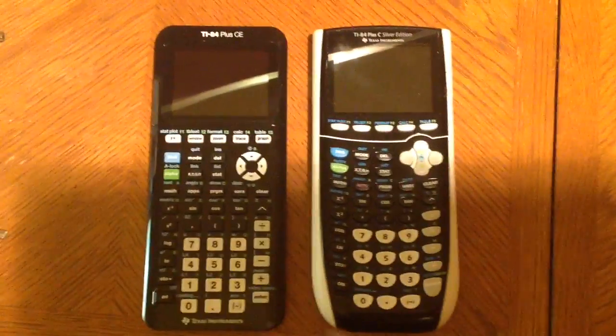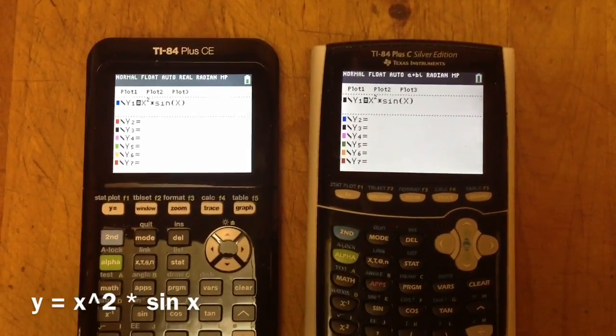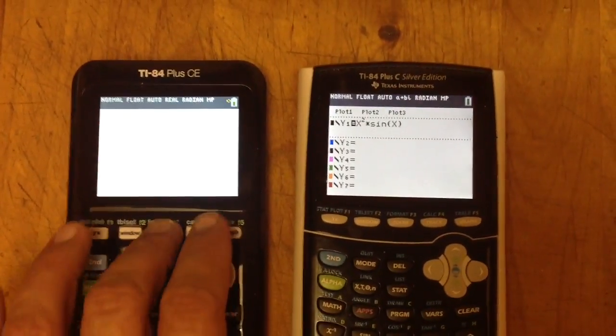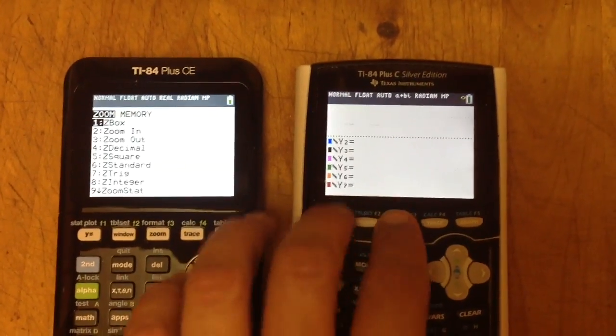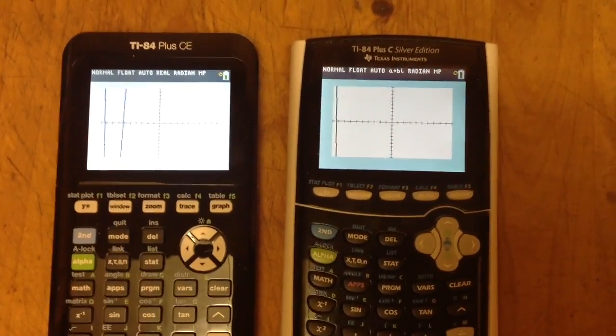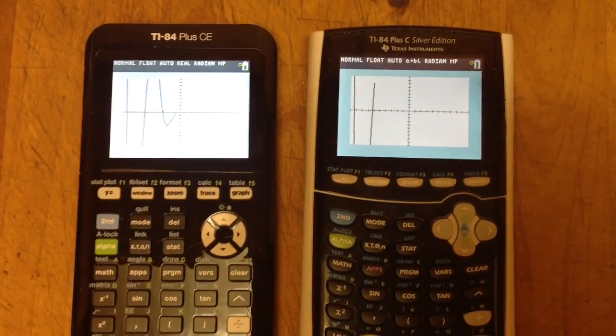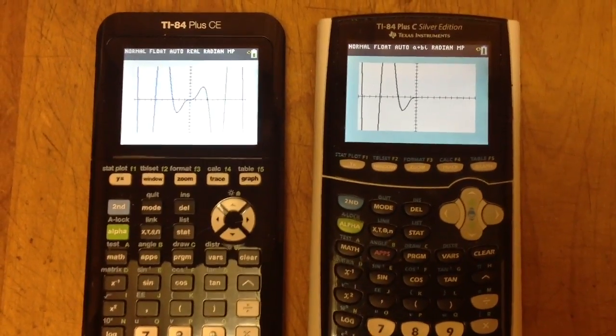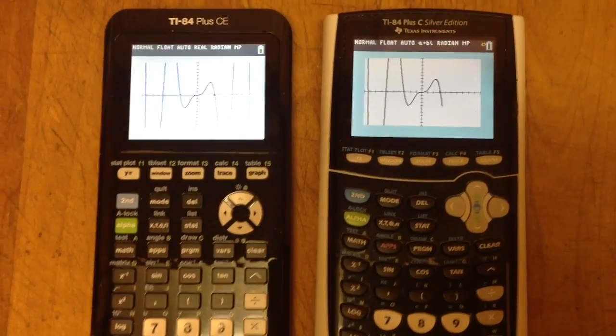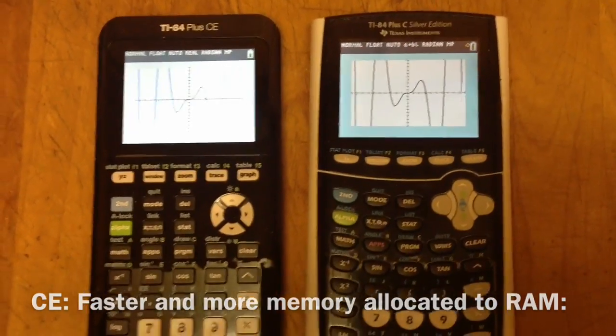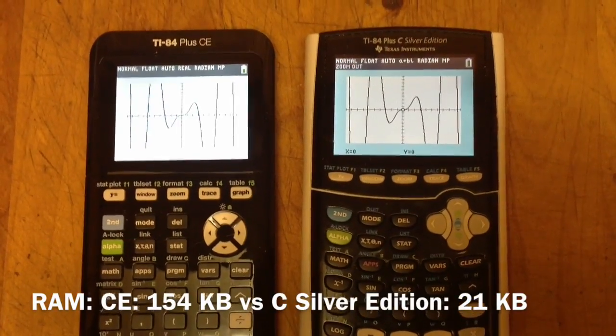This calculator is a lot faster. So here is the equation X squared times sine of X squared. So I'm going to do a zoom standard, which is zoom 6. I know I didn't hit them both at the same time, but you can easily see the TI-84 Plus CE graphs the function at a much faster rate than the 84 C Silver edition.